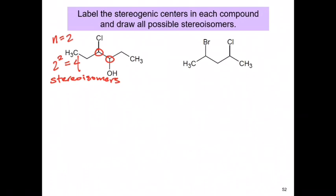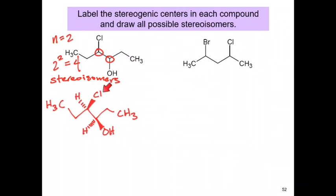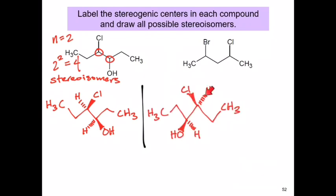Now that you've identified the maximum number of stereoisomers possible, you can draw the structure of the molecule and arrange the groups arbitrarily around the chiral centers. In the first structure, the chlorine is positioned facing towards the front and the hydrogen facing towards the back. The hydroxy group is facing towards the front and the hydrogen facing towards the back on the other chiral center. After drawing the structure and their three-dimensional orientations, you can go ahead and draw its mirror image.